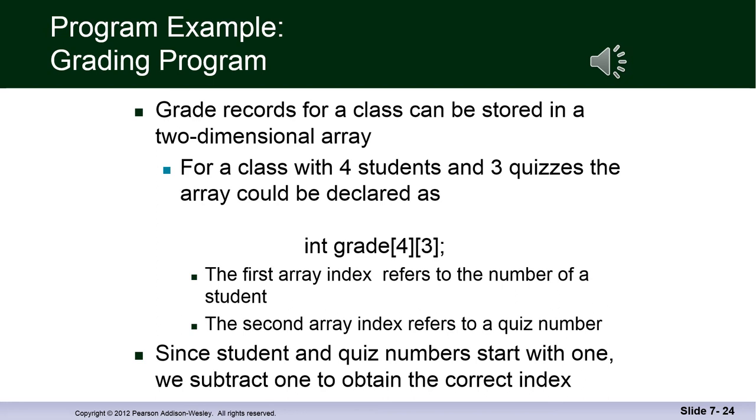Some examples of an application for a multi-dimensional array. Imagine a class with four students and three quizzes, pretty small class. And the array called grade could be [4][3]. The first array index refers to the number of students and the second array index refers to a quiz number. Since student and quiz numbers start with one, we subtract one to obtain the correct index.